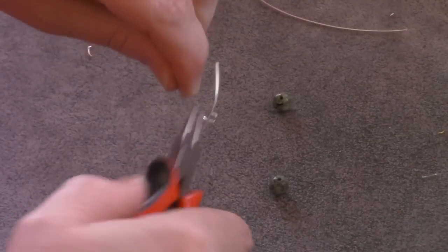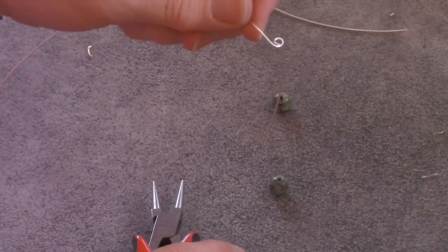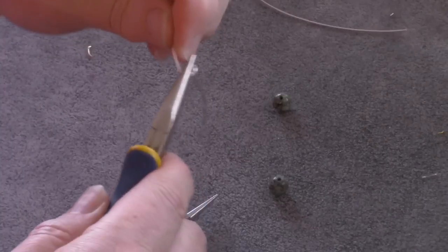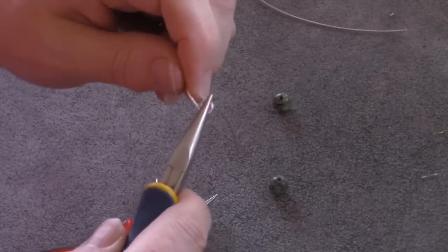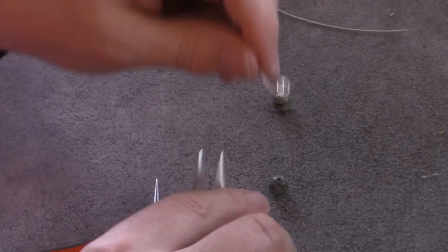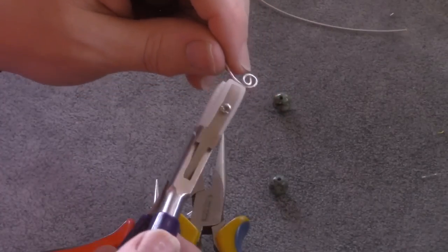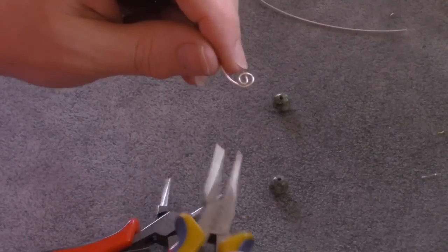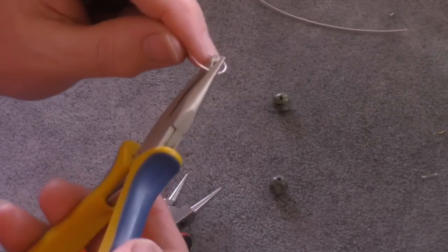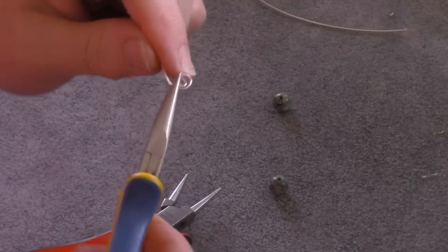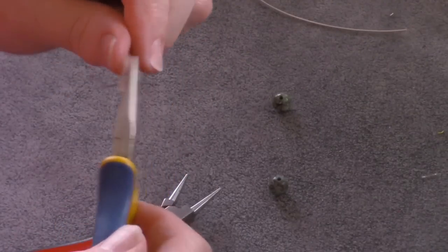Then if you want you can just grab hold of the chain nose pliers. If you're worried about marking your wire then you can tape your pliers or use wire straightening pliers. But I'm not too worried about that because the bead is going to be in there anyway so it's going to cover up any marks that I make.